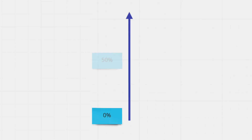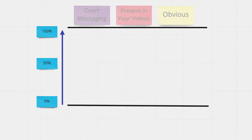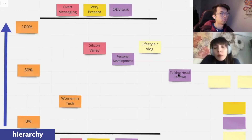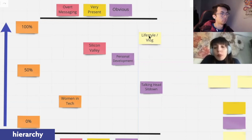I set up on my digital whiteboard a graph you could draw yourself on a piece of paper. On the y-axis, there's a huge arrow pointing up. At the bottom I label it 0%, in the middle 50%, and at the top 100%. I then draw two lines, and at the top I want you to write 'obvious, very present, overt messaging,' and at the bottom, 'subtle, background, indirect messaging.' The designing process of building the recipe for your YouTube content comes down to taking the ingredients from your list and making choices about where they should fit on this spectrum.